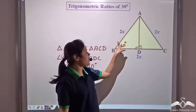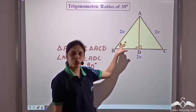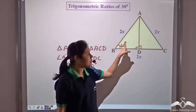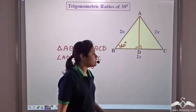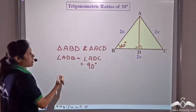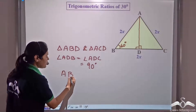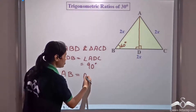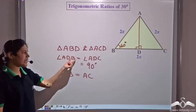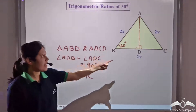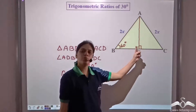The hypotenuse in triangle ABD is 2x, and the hypotenuse of triangle ACD is also 2x. So AB equals AC equals 2x. We also have right angle, equal hypotenuse, and side AD common to both.